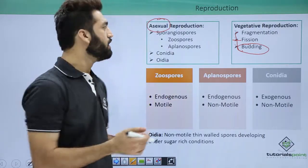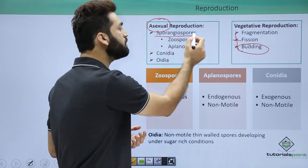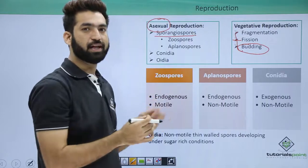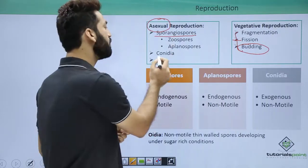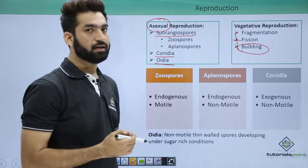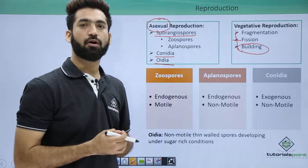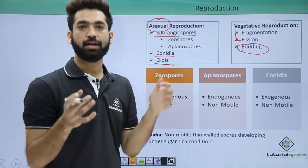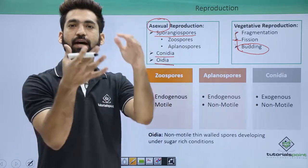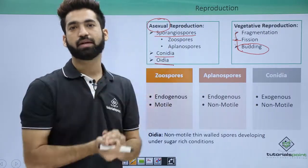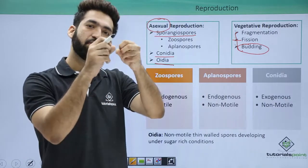In asexual reproduction, fungus reproduces with the help of spores. There are different kinds of spores produced: sporangiospores, conidia, and oidia.